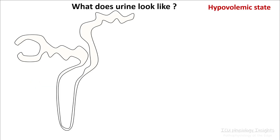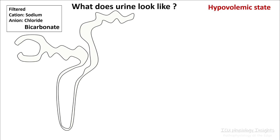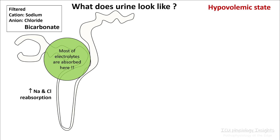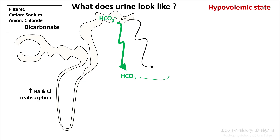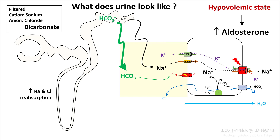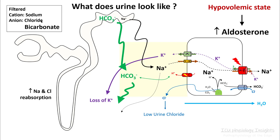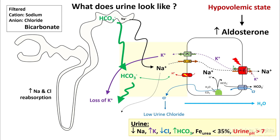So what does your urine look like in a hypovolemic state? Sodium, chloride, and bicarb are all filtered out well, and since most electrolytes are absorbed in the proximal convoluted tubule — and in a hypovolemic state this is ramped up — you have increased sodium and chloride reabsorption. So a small amount of sodium and quite a bit of bicarb reaches your collecting duct. In the collecting duct under the influence of aldosterone you have more sodium absorption and resultant potassium loss. Most of the bicarb is excreted in urine, and since very low amounts of chloride reach here, your urine chloride is also pretty low. So urine is deficient in sodium and chloride while it is high in potassium and bicarb. Your FE urea is less than 35% and your urine pH will be more than 7.